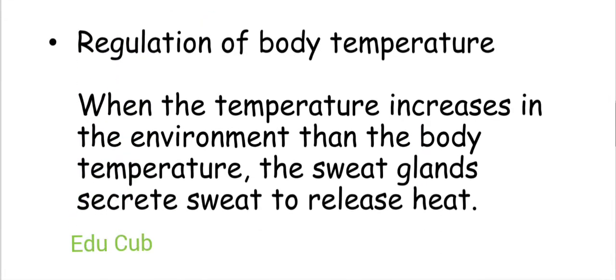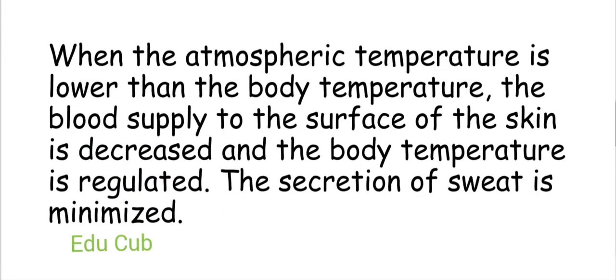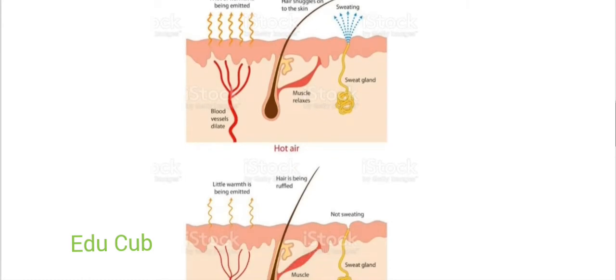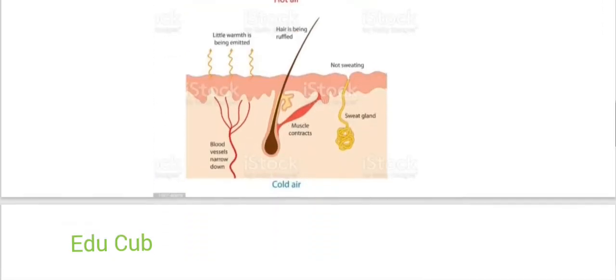The next function is regulation of body temperature. When the environmental temperature rises above body temperature, the sweat glands secrete sweat to release heat. When the atmospheric temperature is lower than body temperature, blood supply to the surface of the skin decreases and the secretion of sweat is minimized, regulating body temperature.